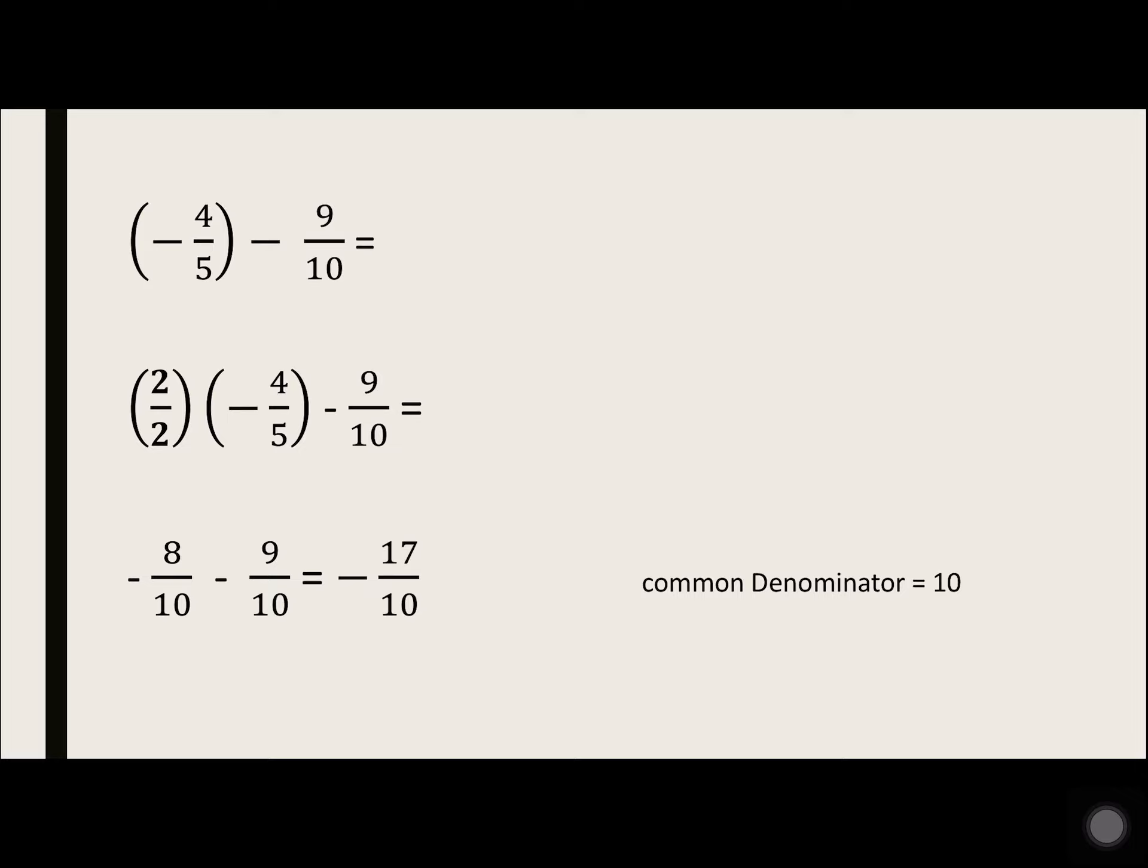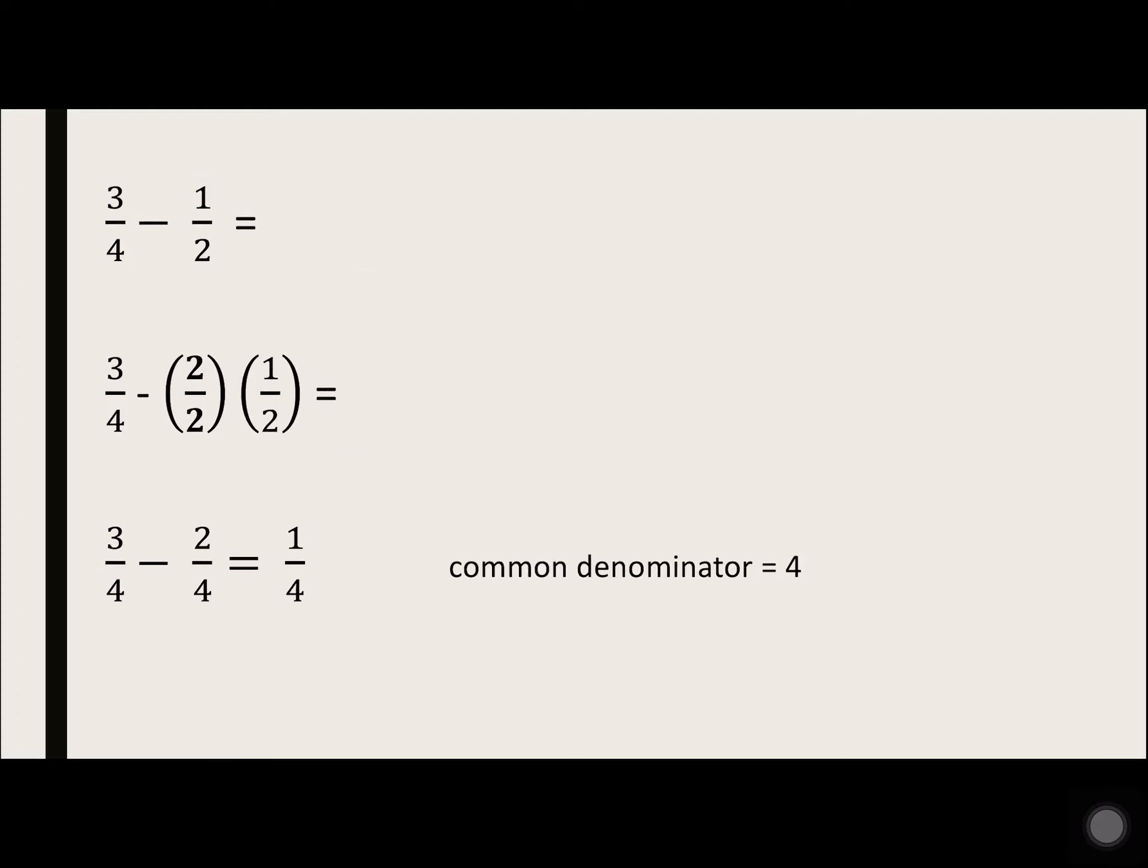So 2 over 2 times negative 4 over 5 is negative 8 over 10. Minus 9 over 10 was already over 10, so we don't have to do anything to it. Minus 8 minus 9 is minus 17 over 10.